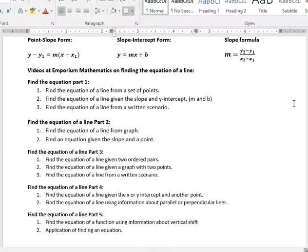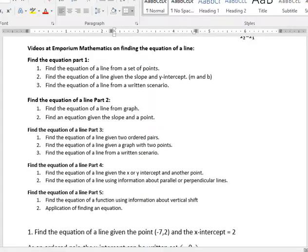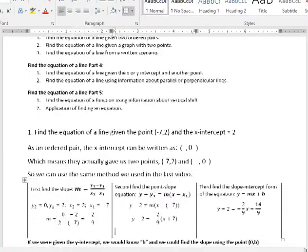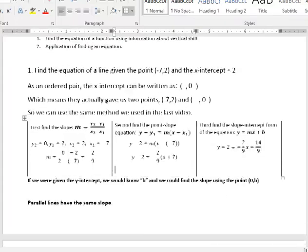I'm not going to read through those, but you're welcome to do that if you're trying to look for a specific thing. You can find it in that video set. Just go into my Emporium Mathematics page and search the videos for find the equation of a line 1, 2, 3, 4, or 5. Today we're doing find the equation of a line given the x or y intercept and another point and find the equation of a line using information about parallel and perpendicular lines.